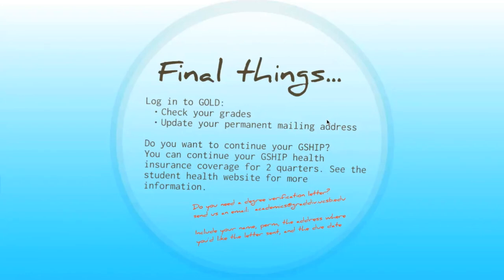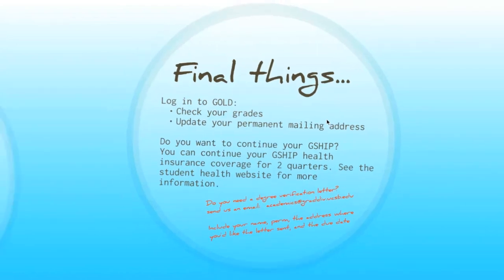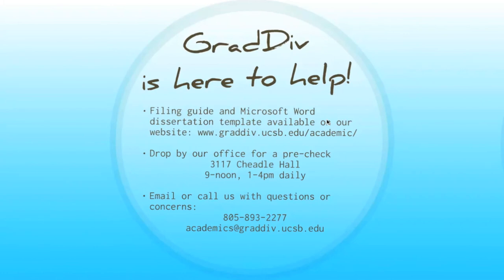If you are going on to a job and need a degree verification letter, send us an email with your name, your perm number, the address where you want it sent, and the date you need it by, and we will do our absolute best to get it there on time. We're here to help. The filing guide and the dissertation template are available on our website along with all filing deadlines. Drop by our office for a pre-check on the third floor of Cheadle Hall from 9 to noon and 1 to 4, or email or call us anytime. Our number is 893-2277 and the email is academics@graddiv.ucsb.edu.